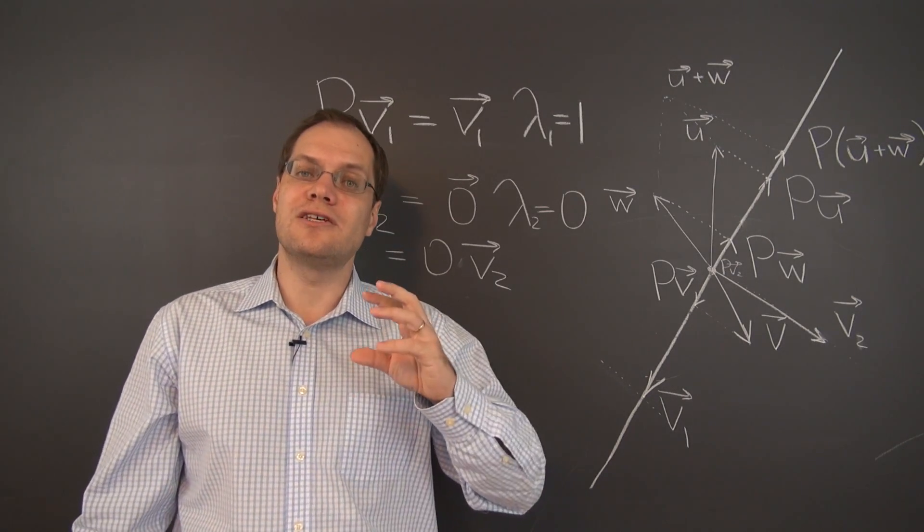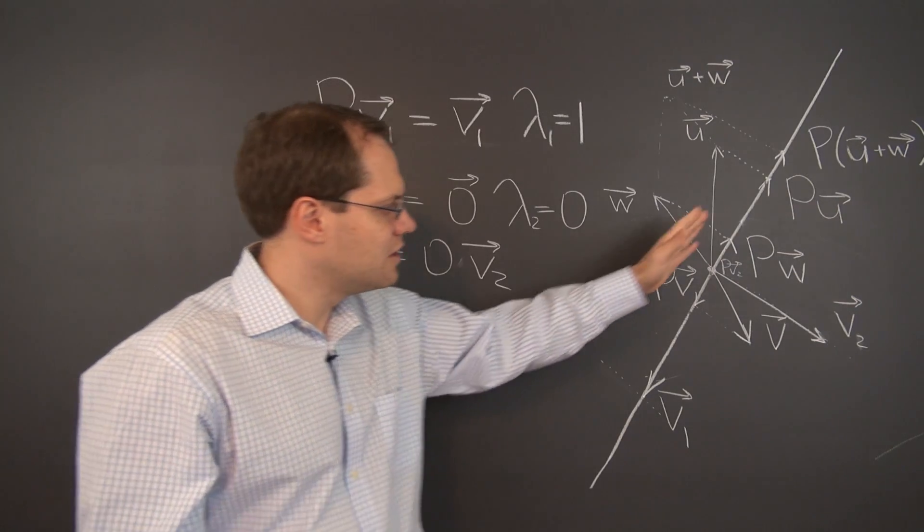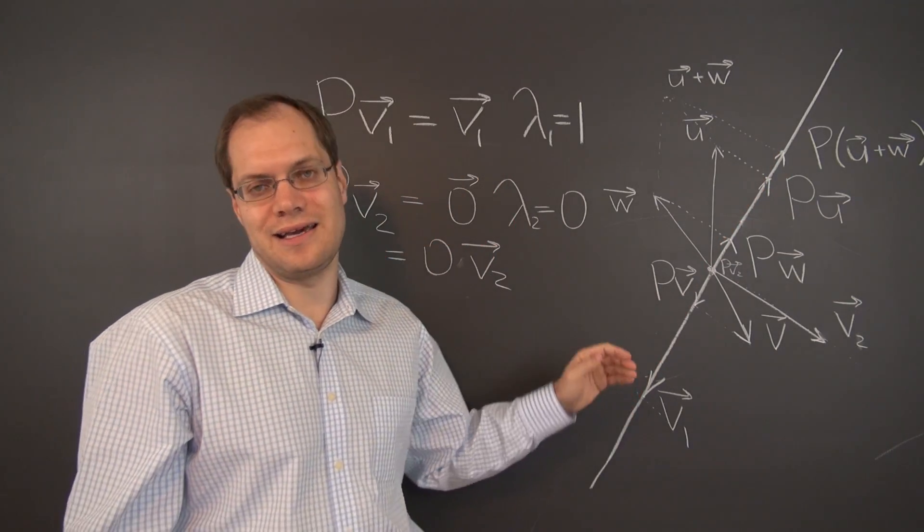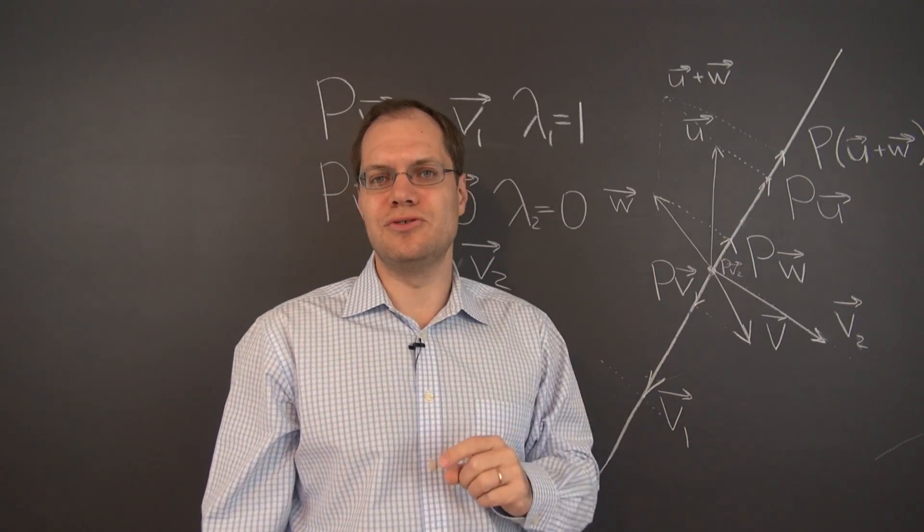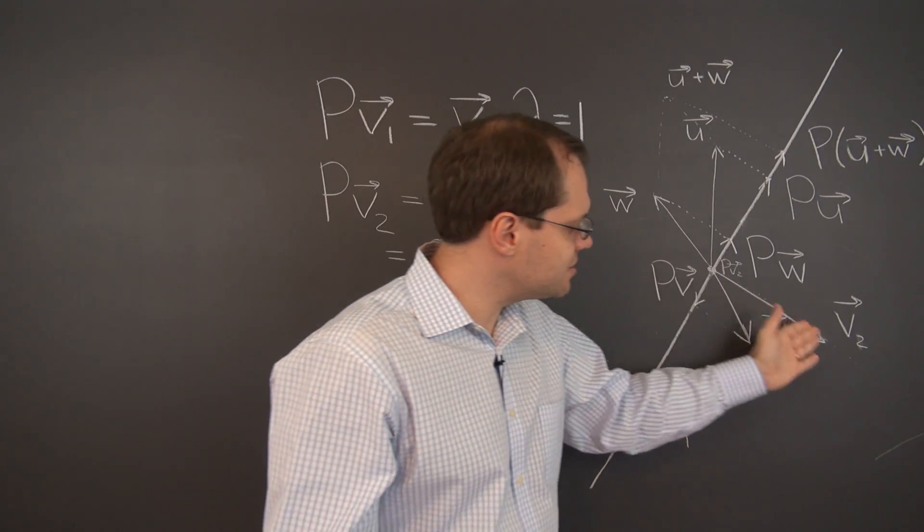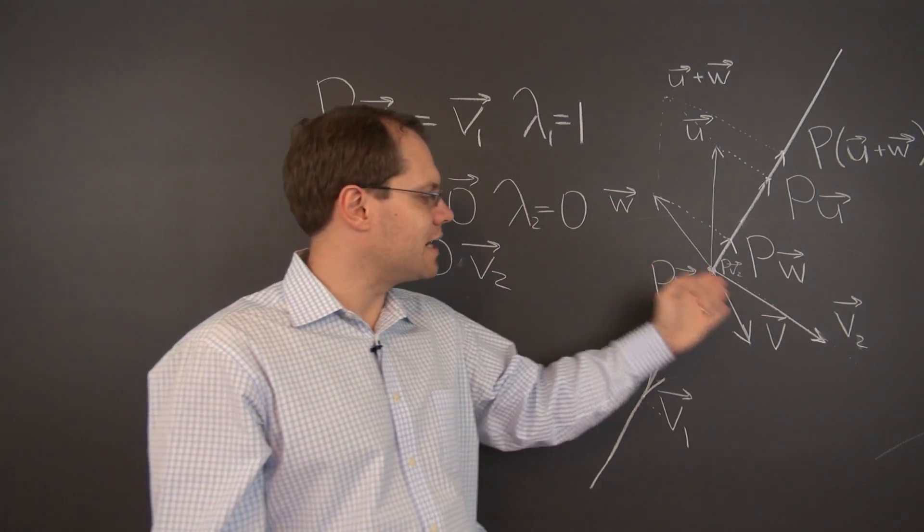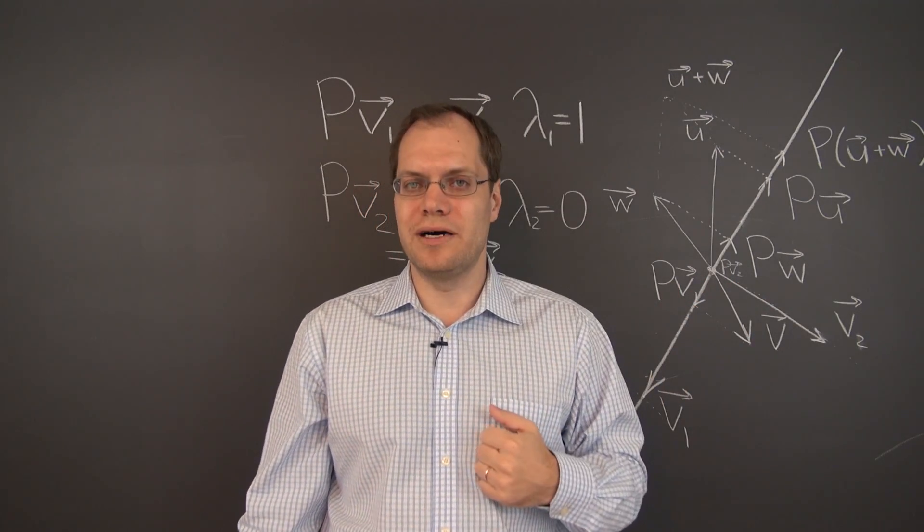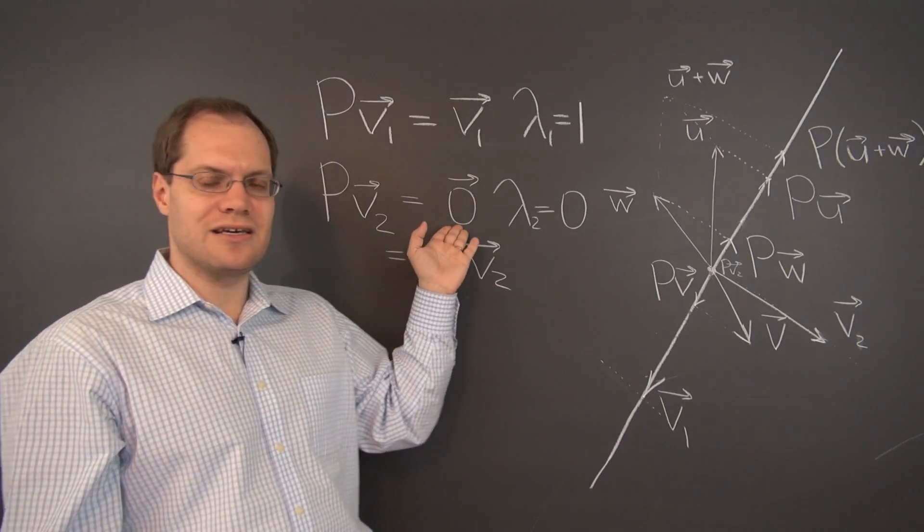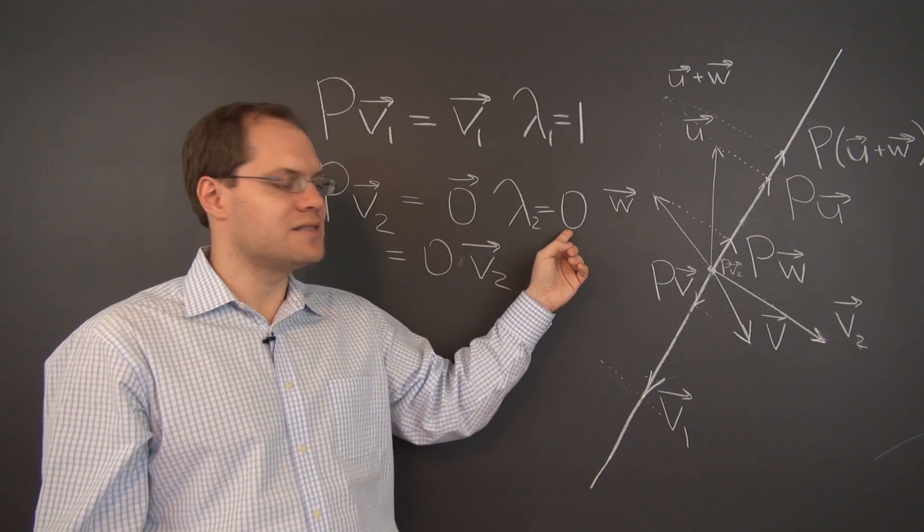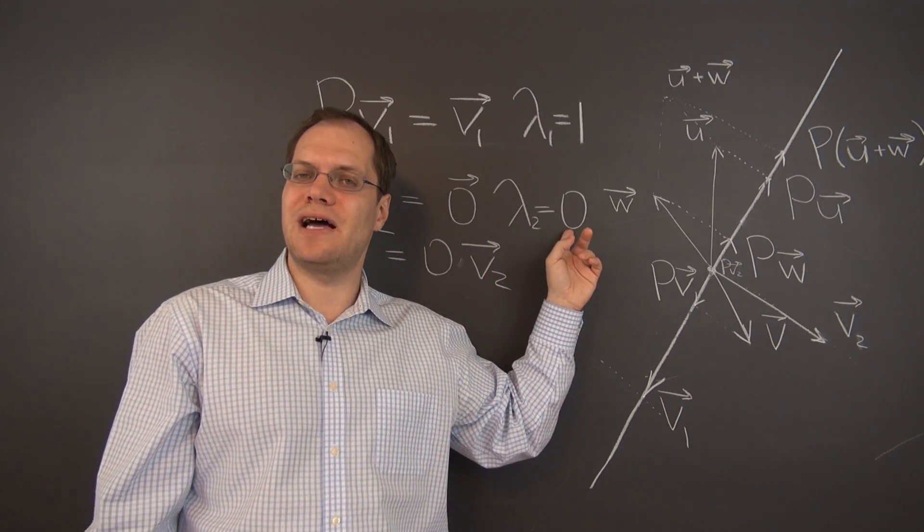So there are two eigenvalues, zero and one, and two corresponding eigenvectors. The eigenvectors are the same as in the case of reflection. One that lies along this line. Again, it's an entire eigenspace. So choose one. And the other one that's perpendicular to the line. Once again, that's an entire eigenspace. So just pick one. And this is a very interesting example.